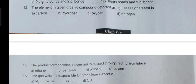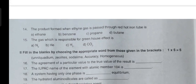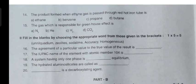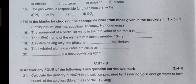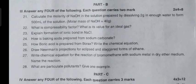The product formed when ethyl gas is passed through red hot iron tubes. The gas which is responsible for greenhouse effect. Fill in the blanks. You should write any four questions of this, each question carries 5 marks.